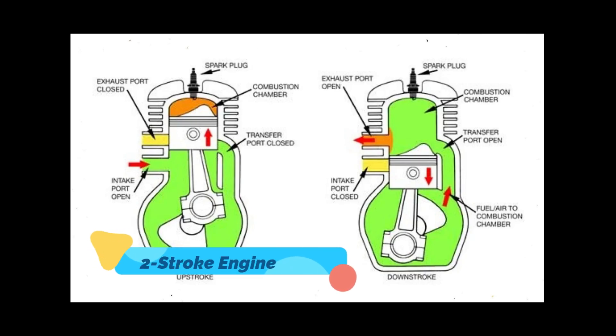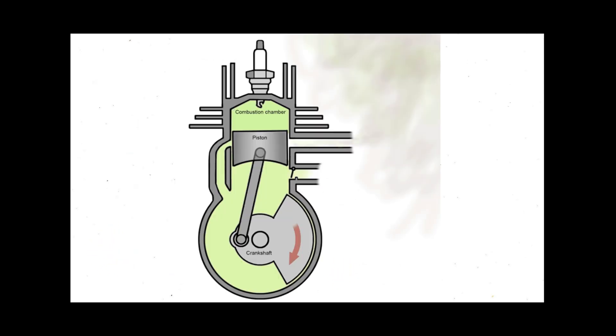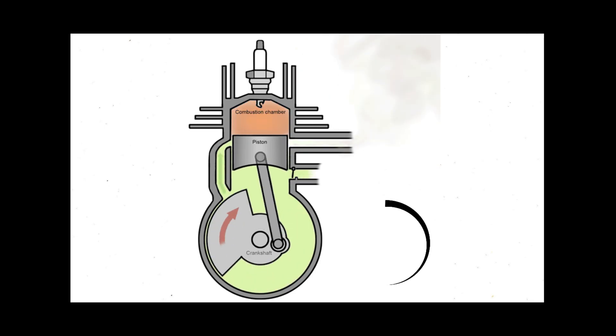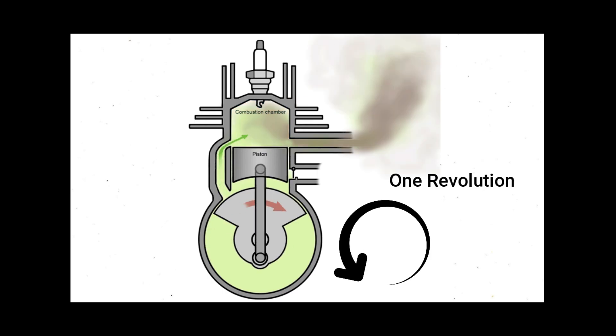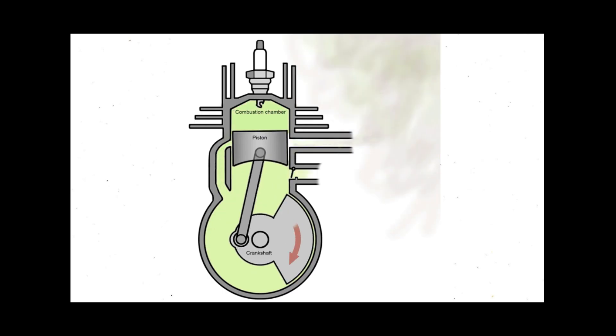First is two-stroke engine. In a two-stroke engine, a piston completes a power cycle with two strokes, one up and one down inside the cylinder to complete one crankshaft revolution during a single fuel burn. In this type of engine, the end of the combustion stroke and the beginning of the compression stroke happen simultaneously, which means the intake and exhaust functions occur at the same time.